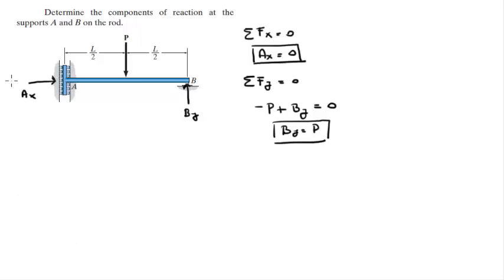So then, the other reaction that you have is a moment at A, so sum of the moments at A are equal to 0. Let's assume, of course, clockwise positive.